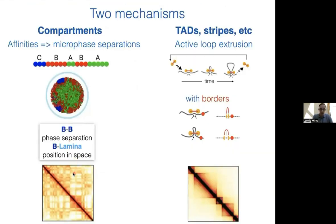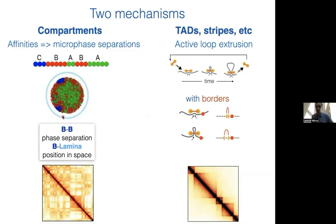So what are the mechanisms? We believe compartments represent a compartmentalization of the genome—the formation of checkerboards represents a phenomenon known from microscopy where inactive regions are largely at the periphery and active ones are largely in the center of the nucleus. This phase separation corresponds to what's called micro-phase separation, and the actual separation of regions is driven by attraction of silenced regions to each other, with peripheral positioning mediated by attraction of these regions to the nuclear lamina.